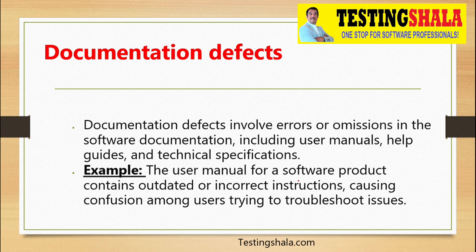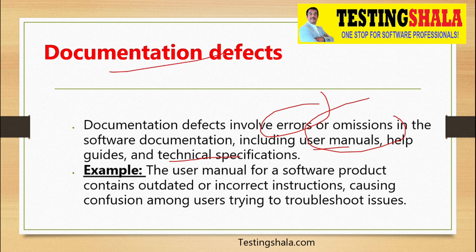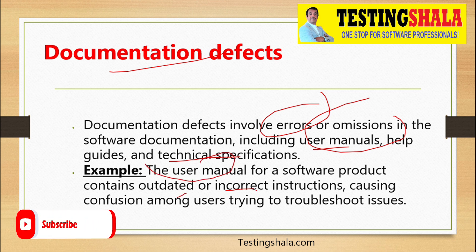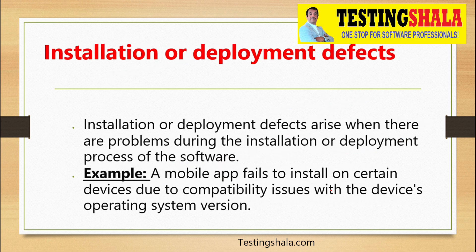The next type is documentation defects. Documentation defects are logged against user manuals, help guides, technical specifications, and similar materials. If there are any errors or omissions in the software documentation, those are logged under this category. For example, if a user manual contains outdated or incorrect instructions causing confusion among users trying to troubleshoot issues, that kind of issue is logged under documentation defects.